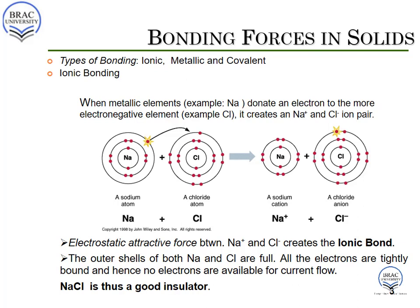By giving up the only electron in the outer shell of sodium, it achieves a steady state of 8 electrons in the outer shell. When the chlorine atom accepts that electron, it also forms the same stable state with 8 electrons in the outer shell. As the sodium ion gives up one of its electrons, it becomes a cation — sodium plus. The chlorine atom, accepting an electron, becomes a negatively charged chloride ion. The electrostatic force between these positive and negative ions creates the ionic bond. NaCl is a good insulator because the electrons are tightly bound and there are no free electrons to allow current to flow.